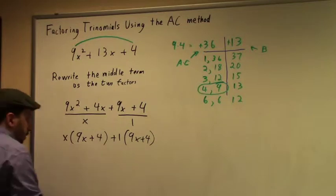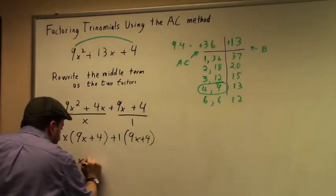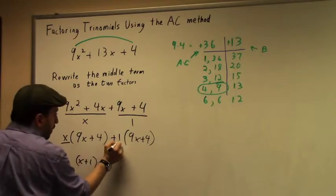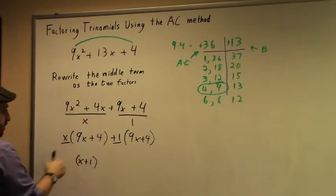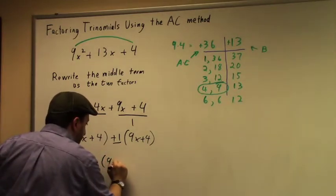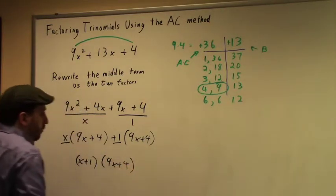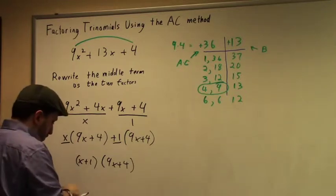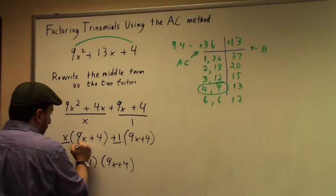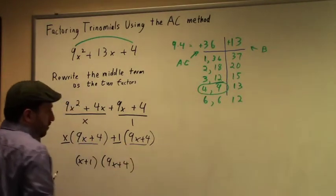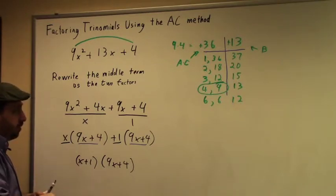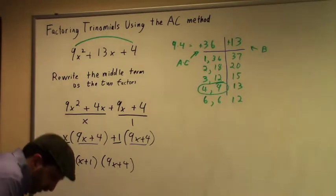Then I'm going to write my answer. I'm going to get (x + 1). That's going to come from what I have outside this pair of parentheses. And I'm going to get (9x + 4) as my other factor. If you're doing it right, these two factors should match. That's what's going to be your second factor when we write our answer. So if those two guys don't match, that means you're doing something wrong.